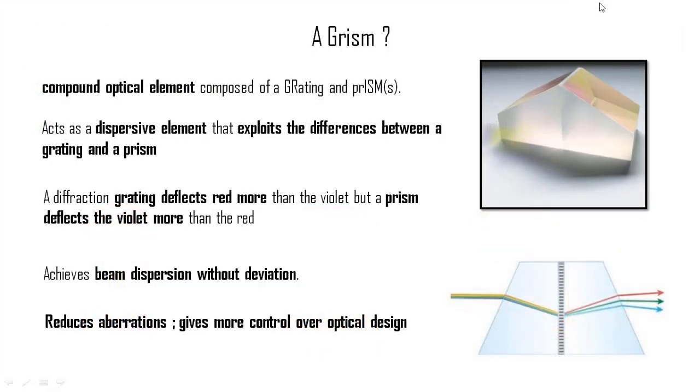Let's talk about something very exciting, a grism. As the name suggests, it's a compound optical element that is made up of a grating and one or more prisms. This assembly acts as a dispersive element by exploiting both the properties of a grating and a prism. We know that a grating deflects the color red more than the violet, but a prism does the exact opposite. It deflects the violet more. Due to a combination of these behaviors, these setups achieve beam dispersion without deviations and are used in very powerful imaging systems. A grism reduces aberrations and gives much more control over optical designs.